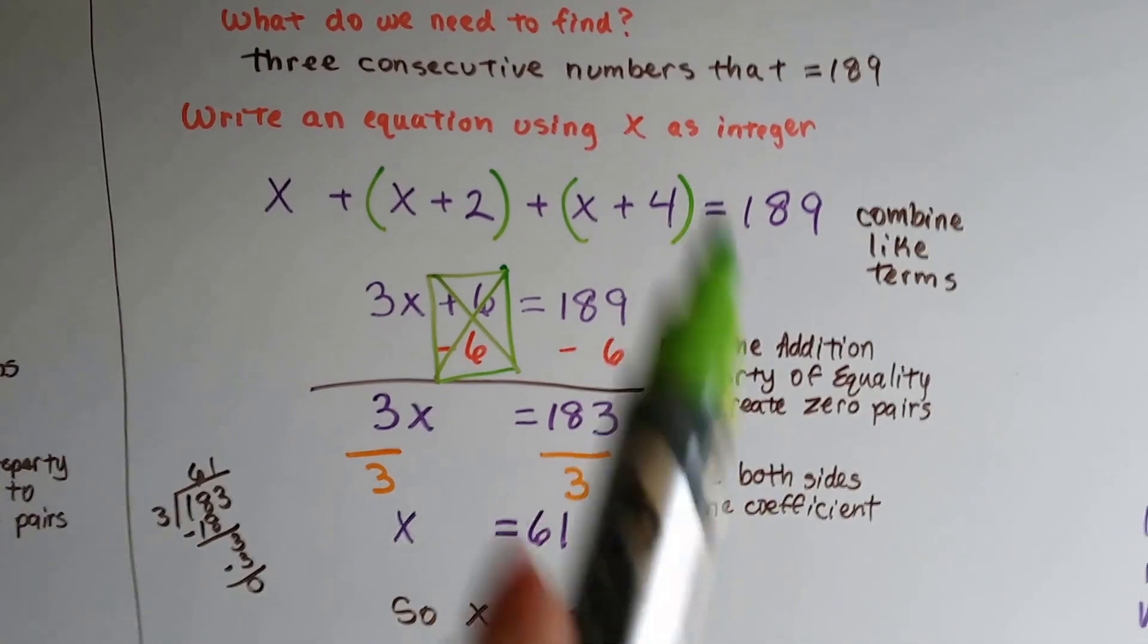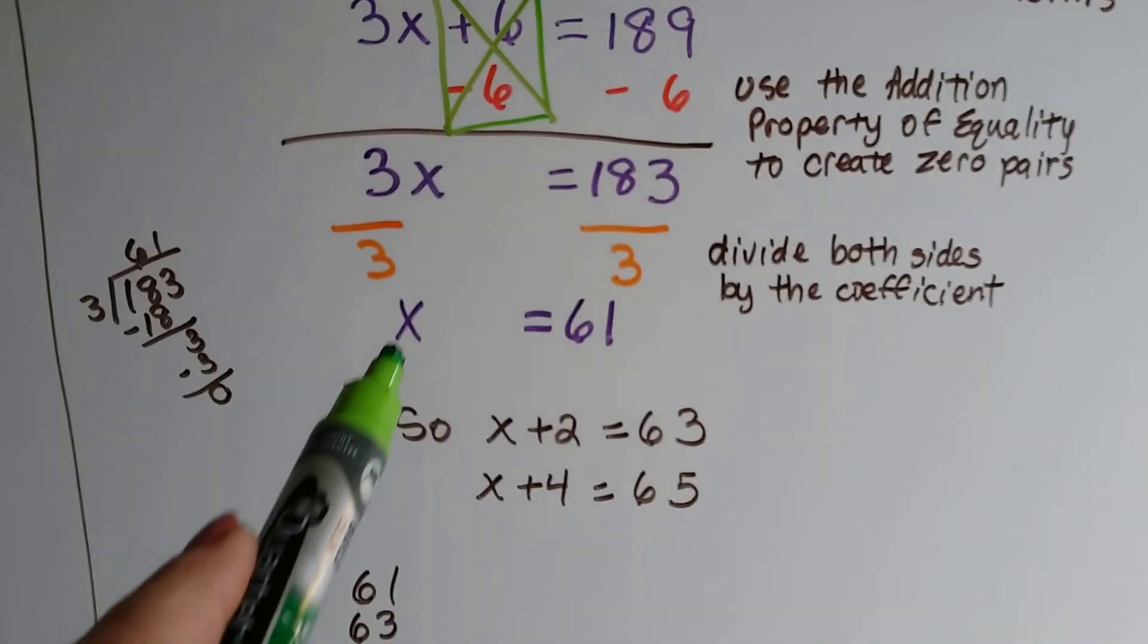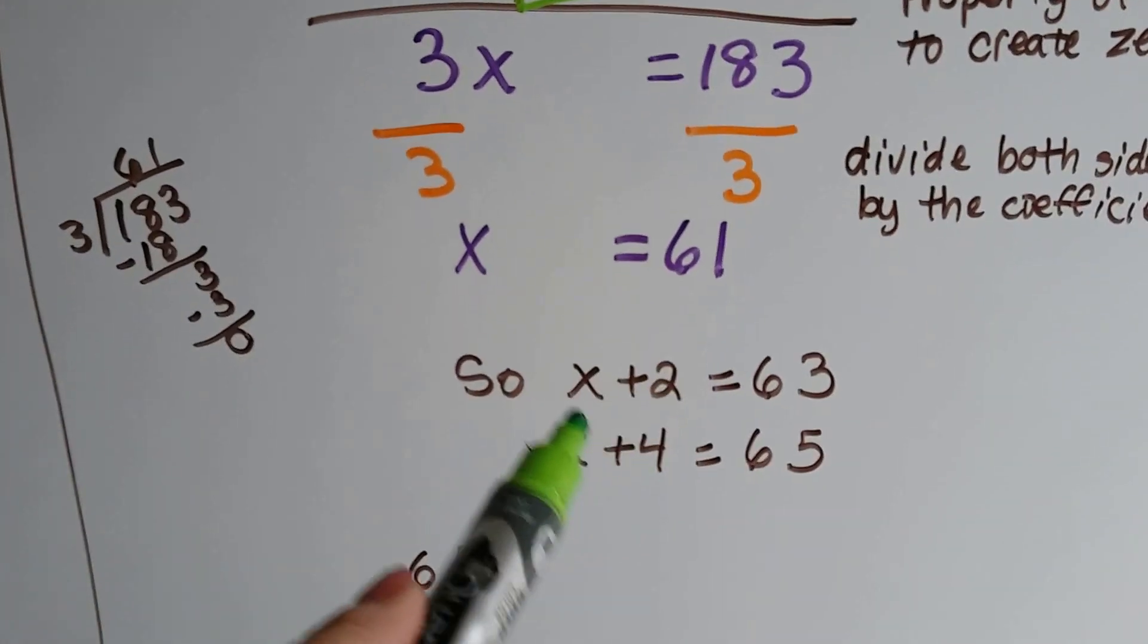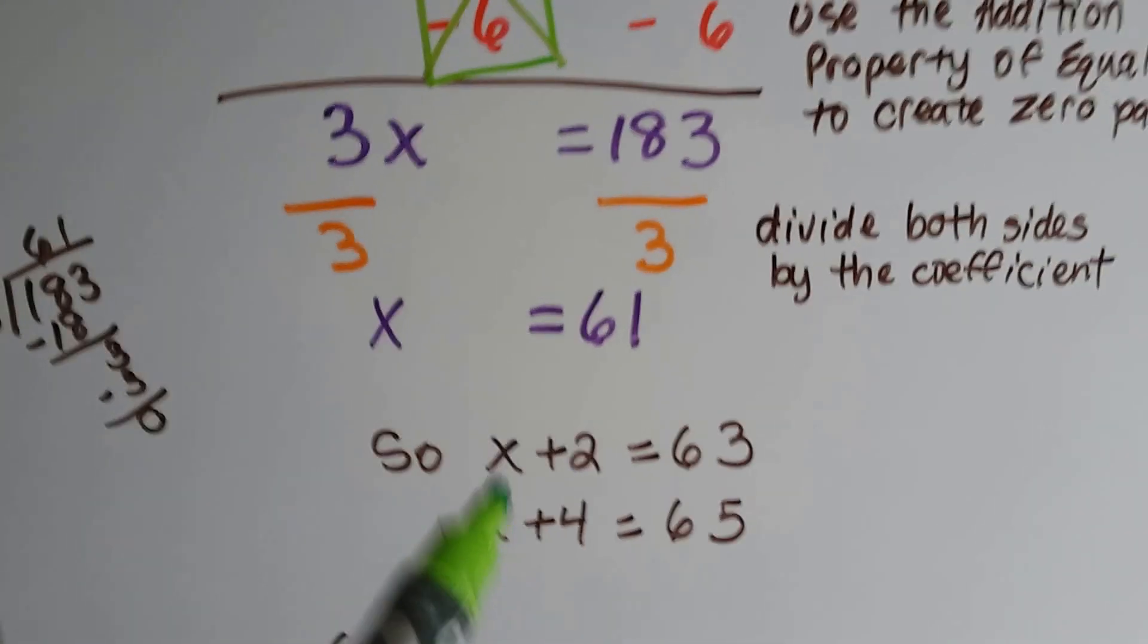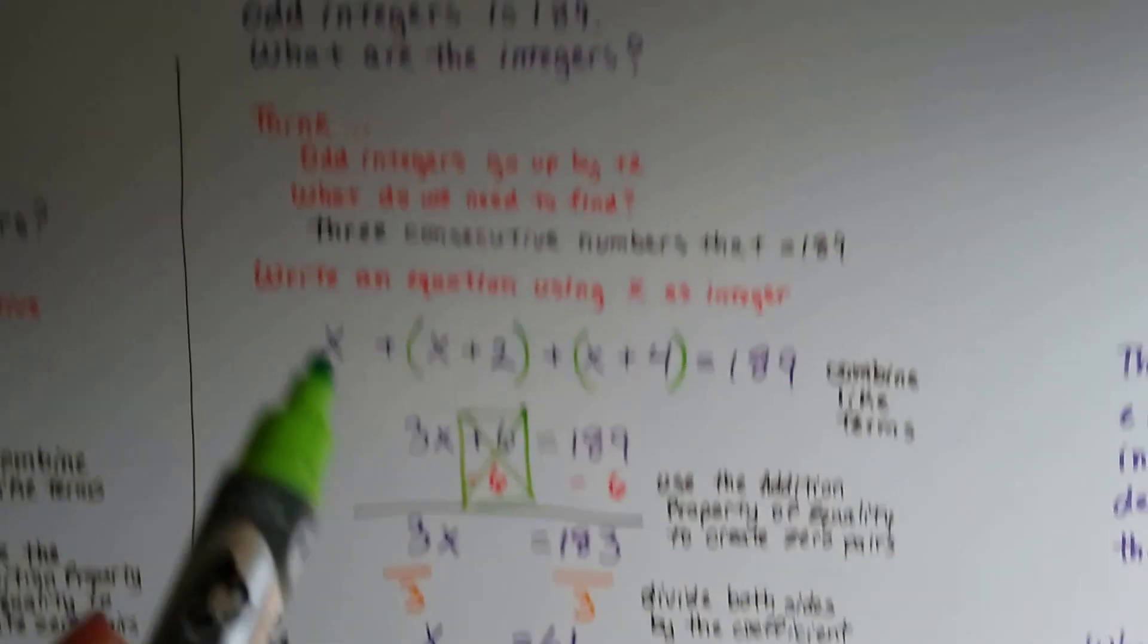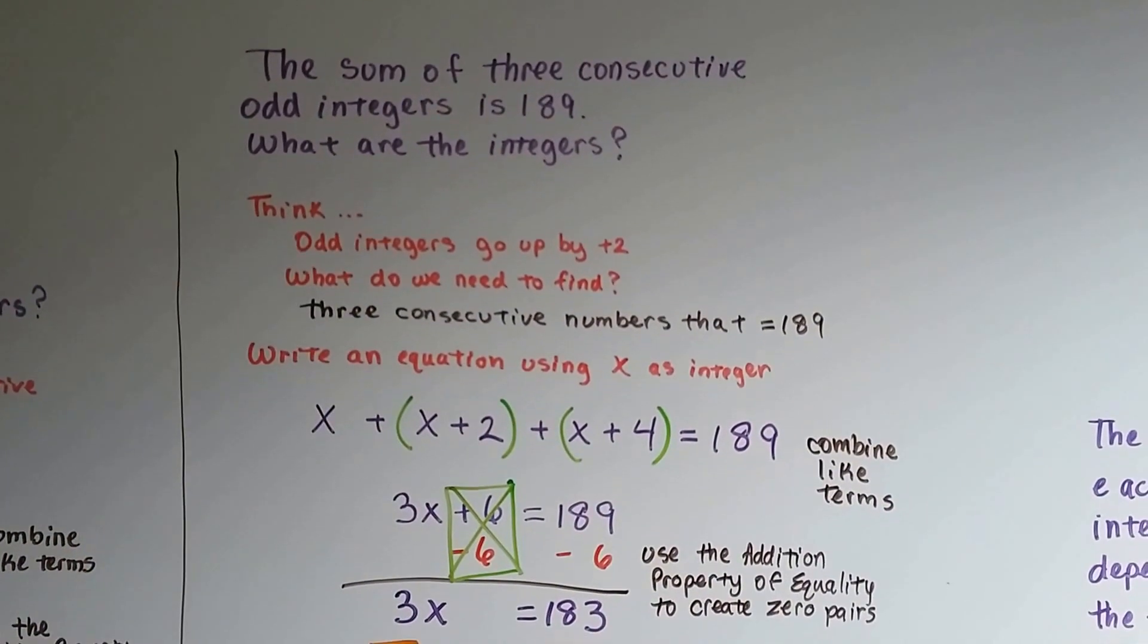Because we have x, x plus 2, and x plus 4. So x is 61. So x plus 2 would be 63. And x plus 4 would be 65.